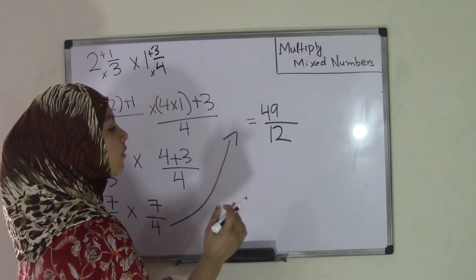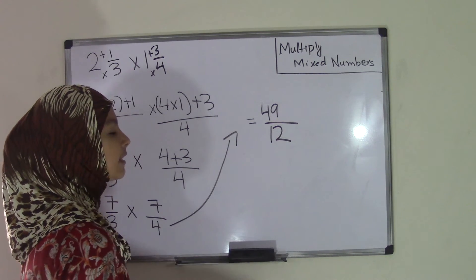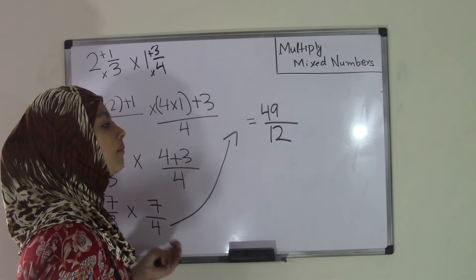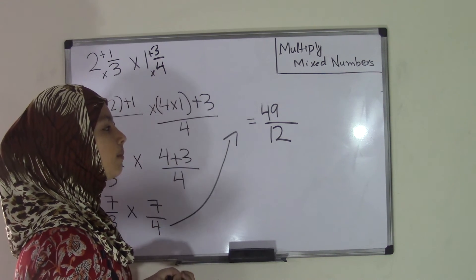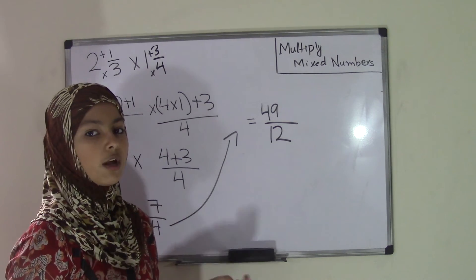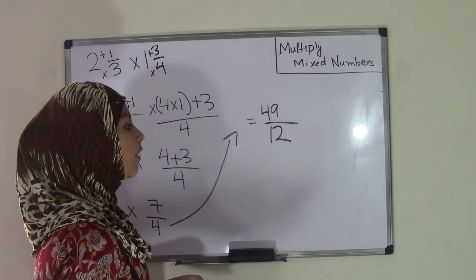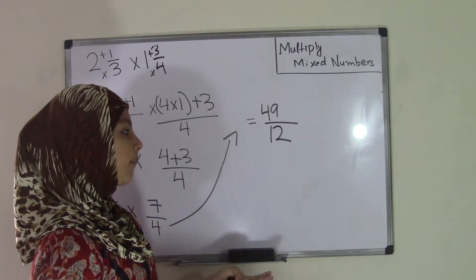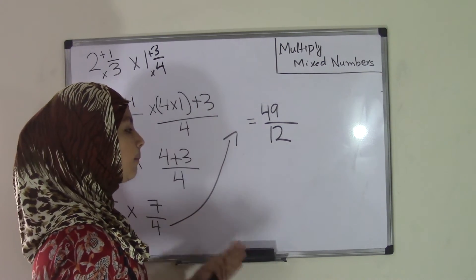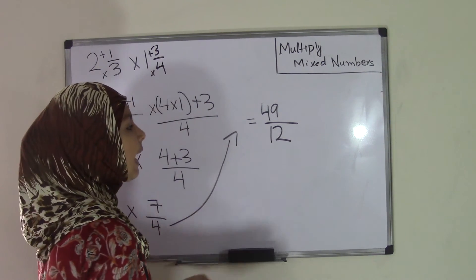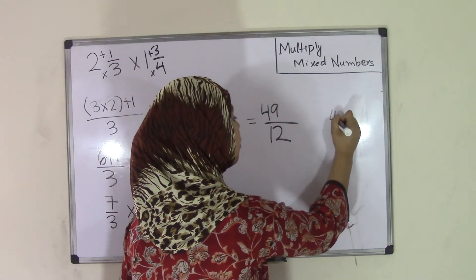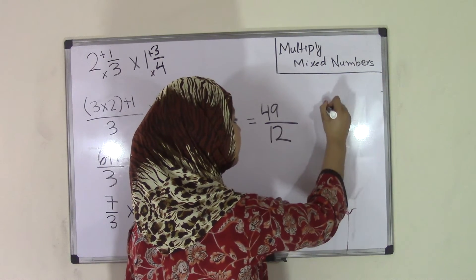Now, look at this. The numerator is greater than the denominator, so that makes it an improper fraction. We can leave our answer like that, but it's better to change this back to a mixed number so that our product is a mixed number. So how do you change an improper fraction to a mixed number? We already know how to change a mixed number to an improper fraction, but this time we have to do the reverse. All you have to do to change an improper fraction to a mixed number is divide the numerator by the denominator. So now we have 49 divided by 12.